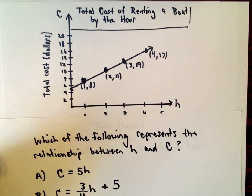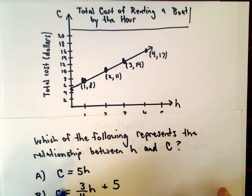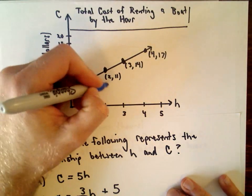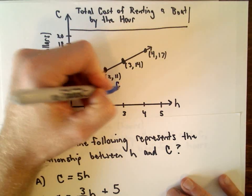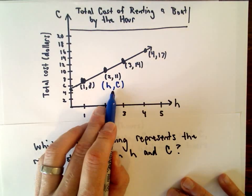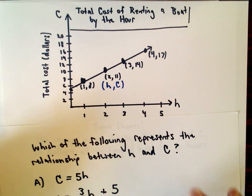So again, I've labeled some points on here. You could always start substituting in values. The first coordinate represents H, the second coordinate represents C. So again, the number of hours rented comma the total cost involved.